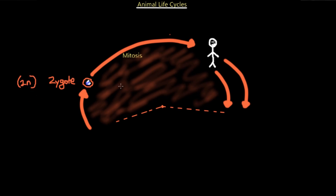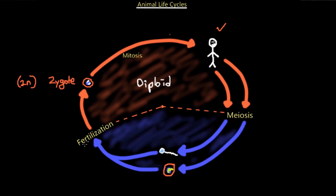The zygote is going to undergo many mitosis processes in order to become a fully grown adult animal or human. This part of the life cycle is called the diploid phase. Anything past the process of fertilization — as soon as fertilization happens, the sperm and the egg join together — we create a zygote, and this entire life cycle of a human or animal is going to be the diploid phase, with two full sets of chromosomes.